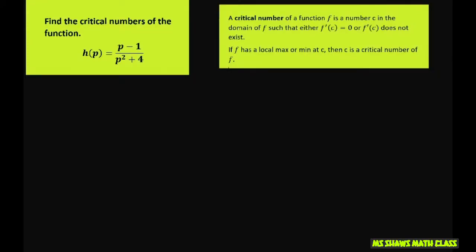Basically what we're going to do is take the derivative of h and set it to 0 and solve for p, and that will tell us your critical numbers.